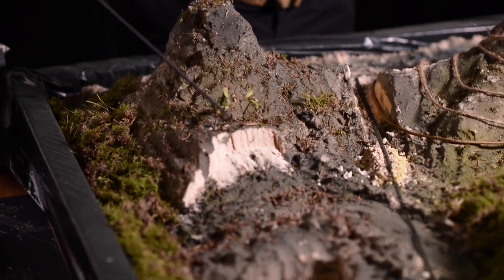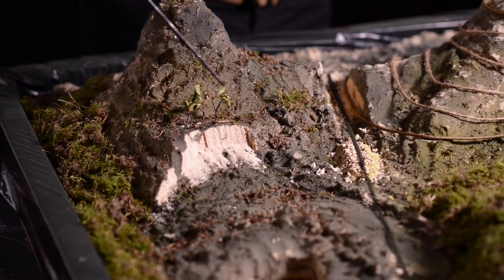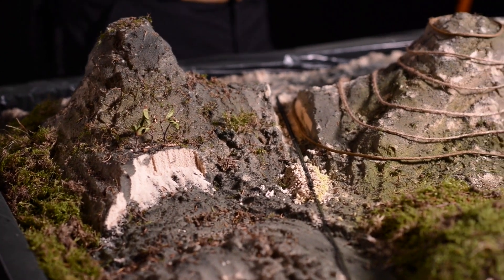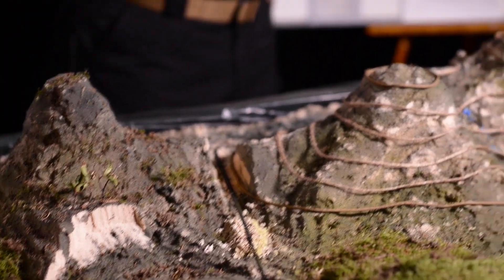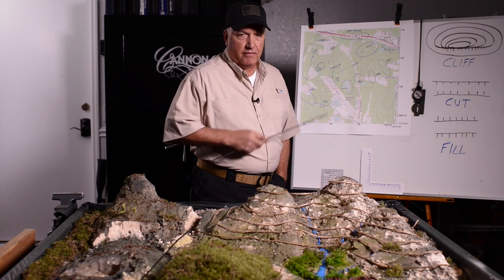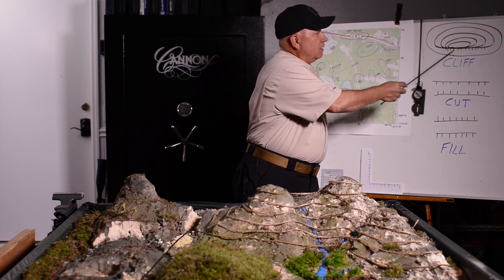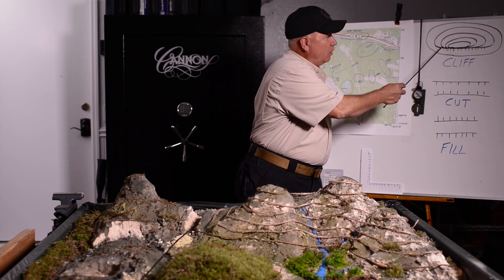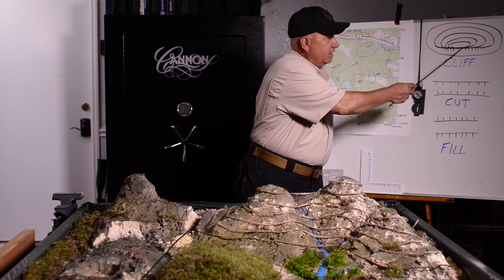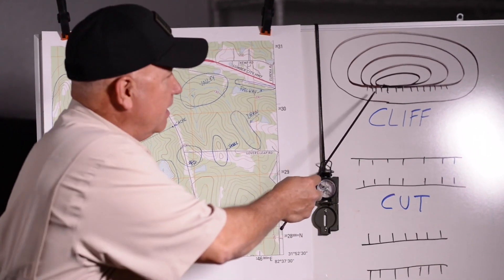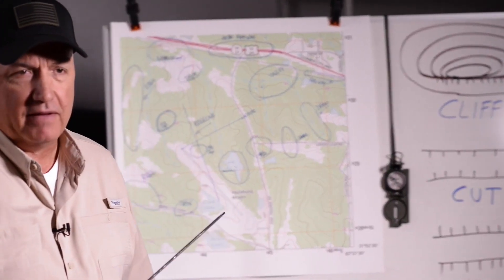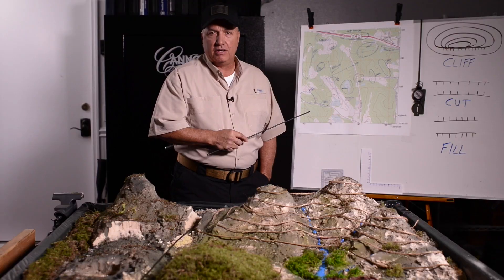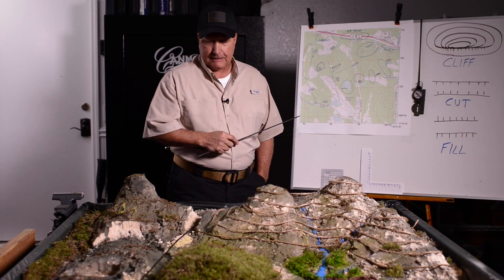We're going to look at the cliff over here. You can see it drops off dramatically. Cliffs are represented in two ways on different topographical maps: one, contour lines converging all in one area, where it clearly shows immediate relief; and then some maps also have tick marks pointing in a downward direction to show you that there's a steep drop-off right there.